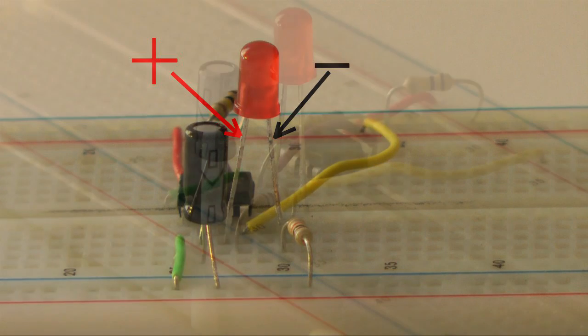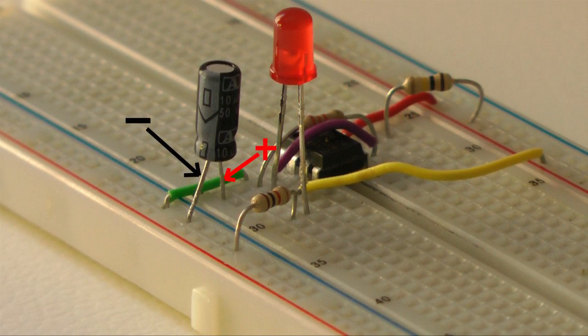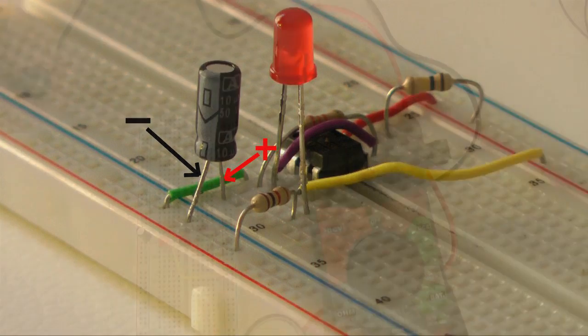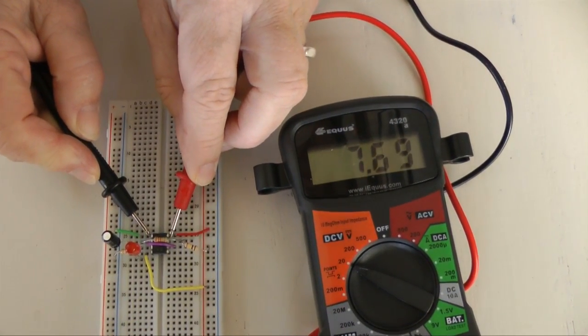Next check the capacitor. Is the positive terminal connected to pin 2? Confirm that all components are installed correctly. A meter is very useful when troubleshooting circuits.